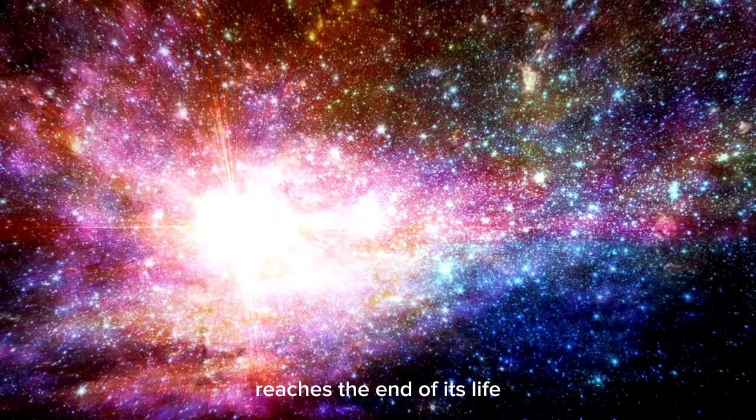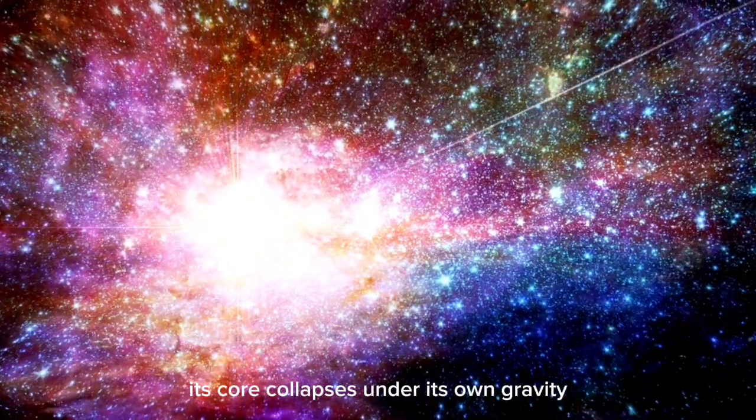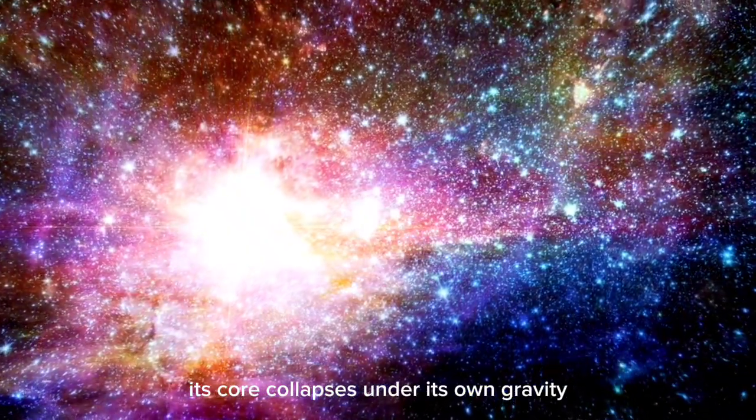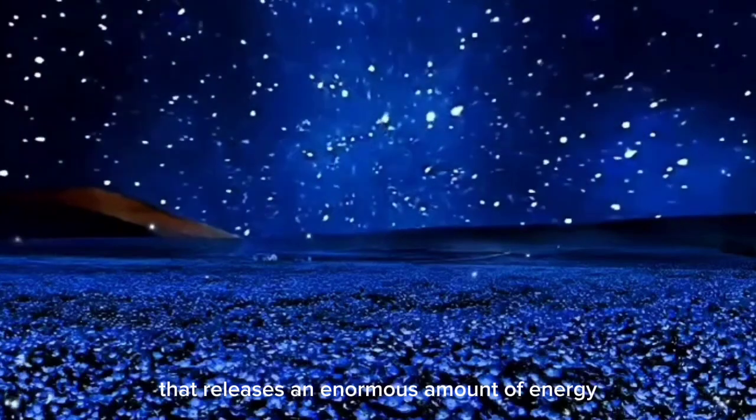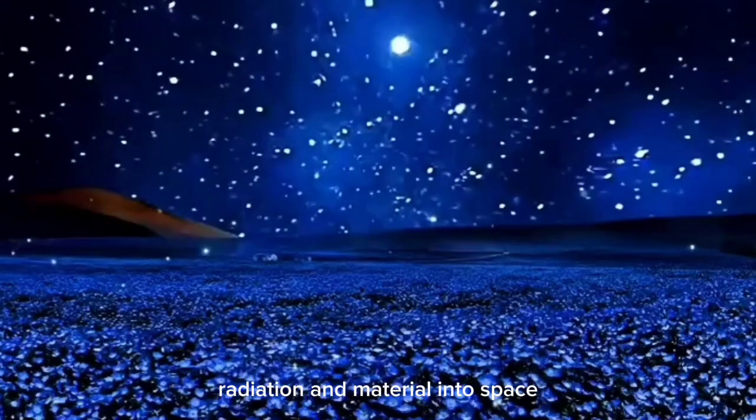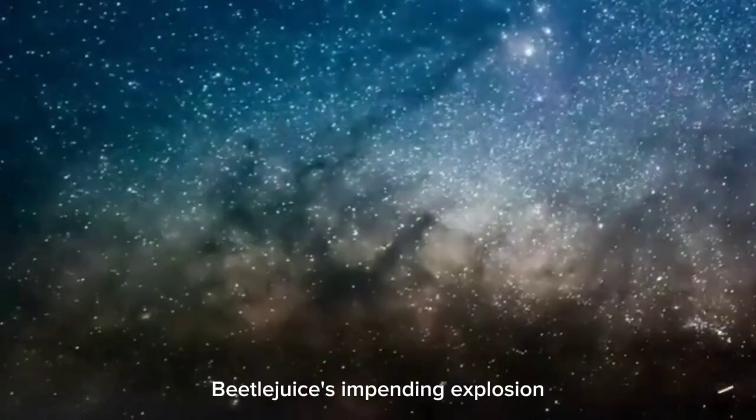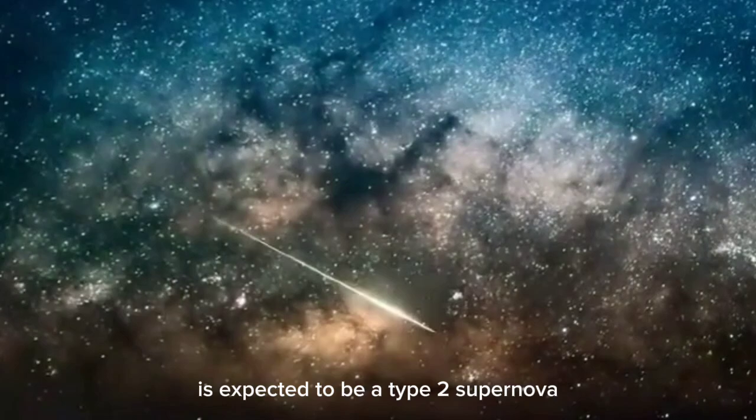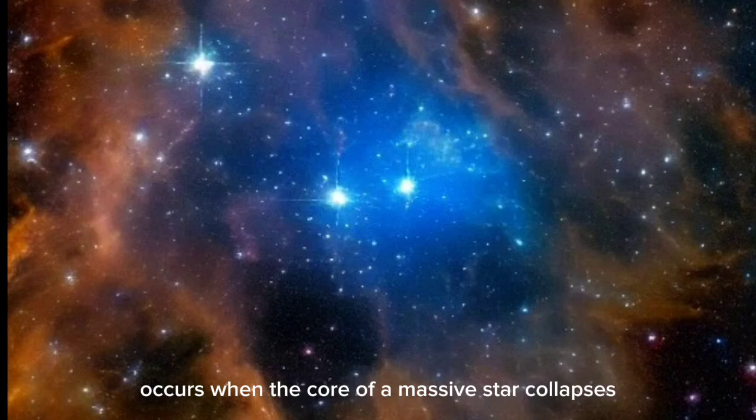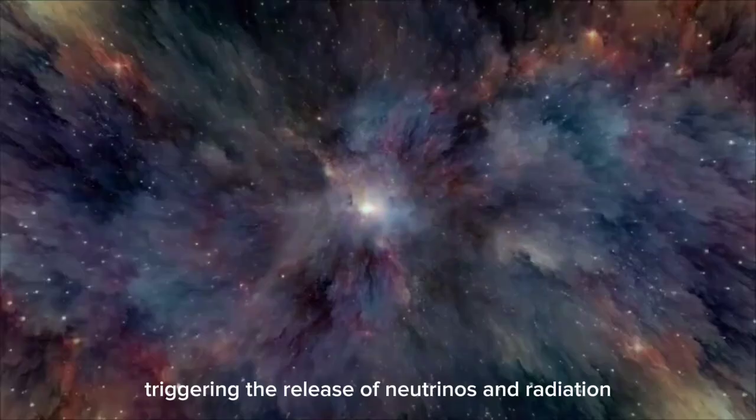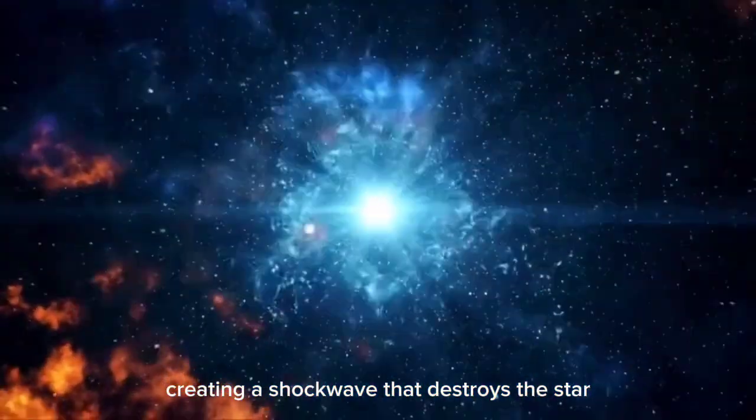When a star like Betelgeuse reaches the end of its life, its core collapses under its own gravity, causing a massive impact that releases an enormous amount of energy, radiation, and material into space. Betelgeuse's impending explosion is expected to be a Type 2 supernova. This type of cosmic event occurs when the core of a massive star collapses, triggering the release of neutrinos and radiation, creating a shockwave that destroys the star.